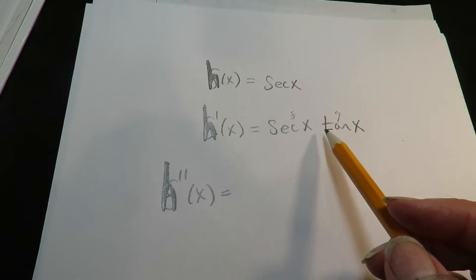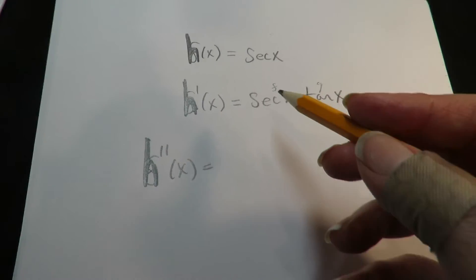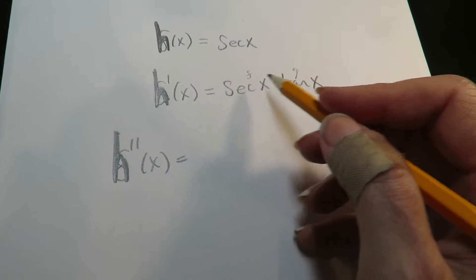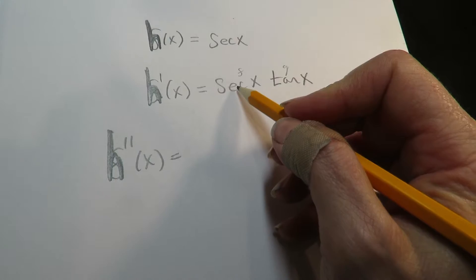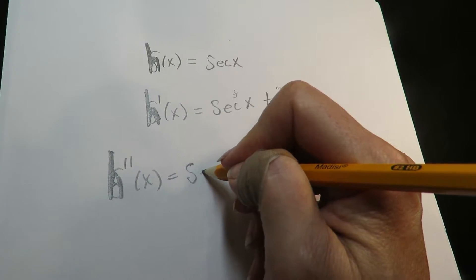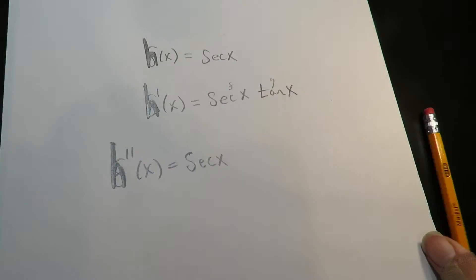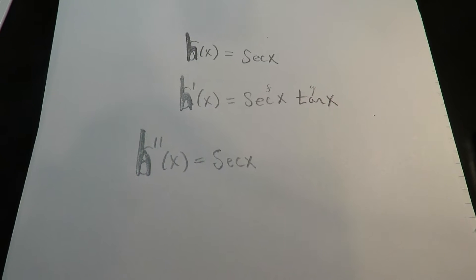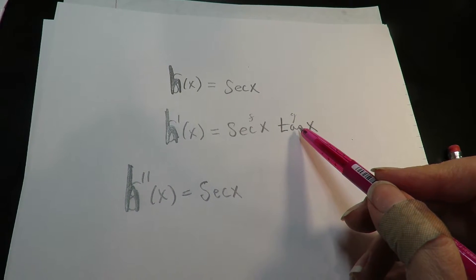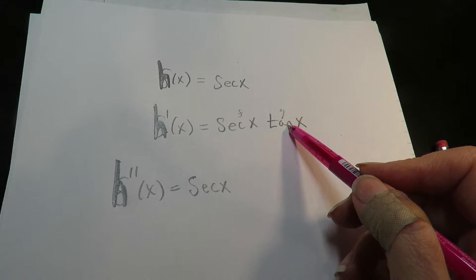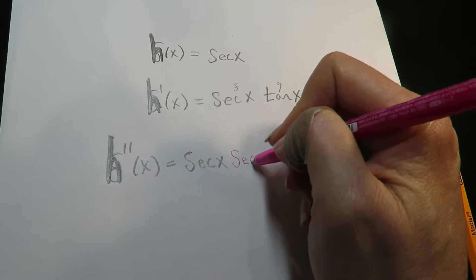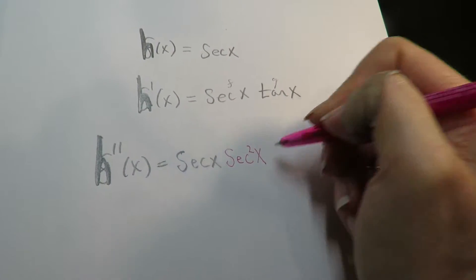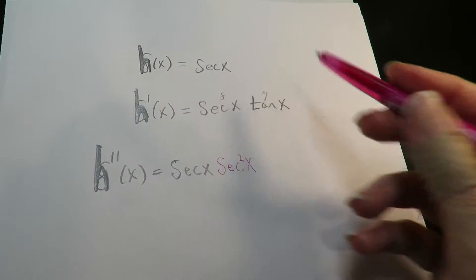Now we're going to use a product rule here. If you remember the rule is it's the first times the derivative of the second. So the first part here secant x times the derivative of the second part: derivative of tangent is secant squared x, that's g prime.